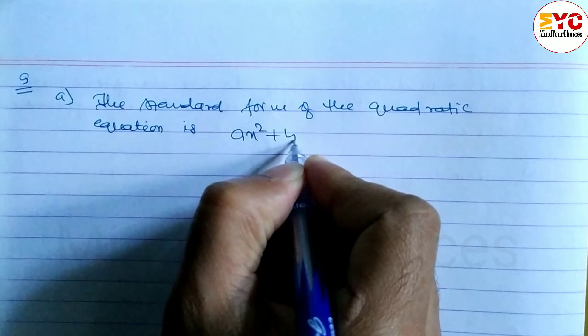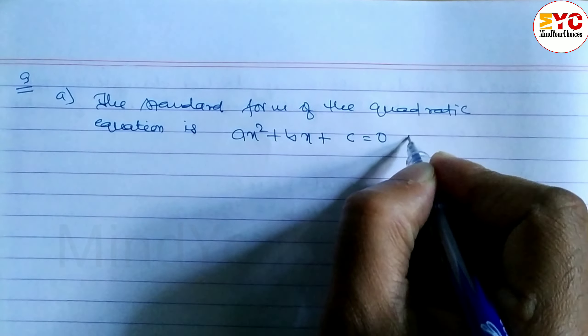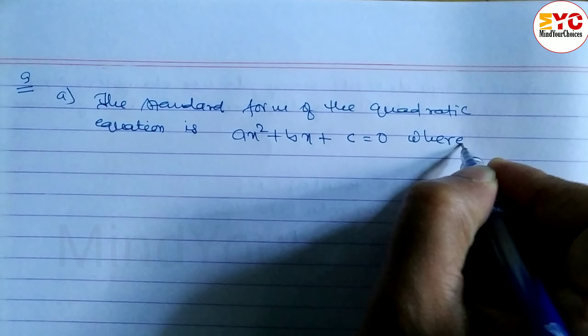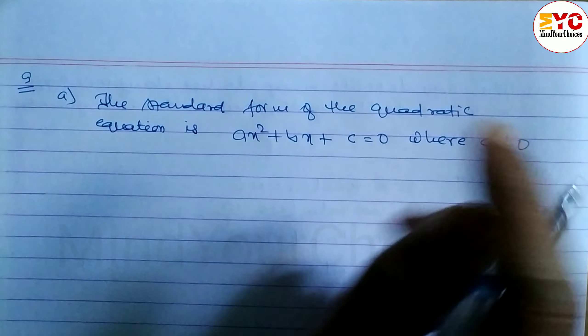Ax square plus bx plus c is equal to 0, where a does not equal to 0.